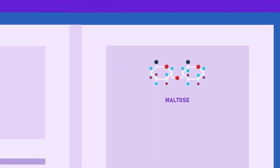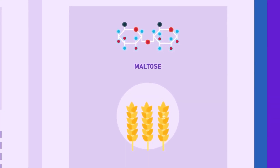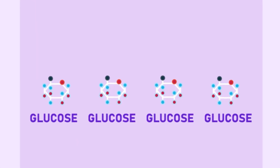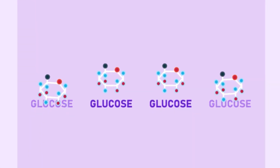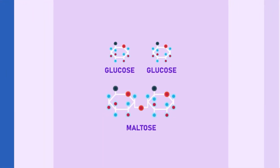Maltose, known as malt sugar, is present in malted cereals and sprouting grains. It is formed from the partial digestion of starch and is a combination of two glucose molecules.